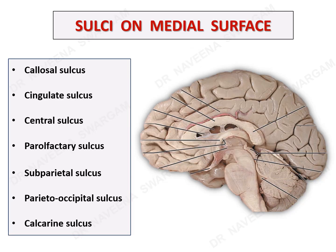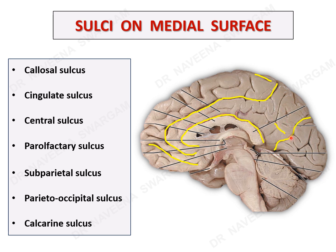To quickly revise the sulci on the medial surface: the callosal sulcus lies just above the corpus callosum; the cingulate sulcus is lengthier with a curved tip towards the superior border, in front of the termination of the central sulcus; near the orbital surface is the parolfactory sulcus; on the parietal lobe is the horizontal subparietal sulcus; the parieto-occipital sulcus separates the parietal and occipital lobes; and on the occipital lobe is the calcarine sulcus, which begins on the medial surface and enters onto the superolateral surface by cutting through the occipital pole.